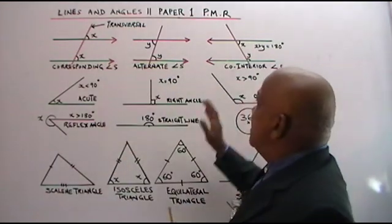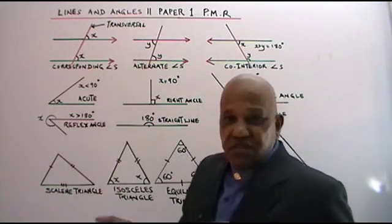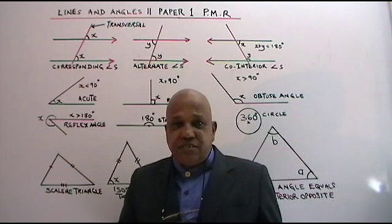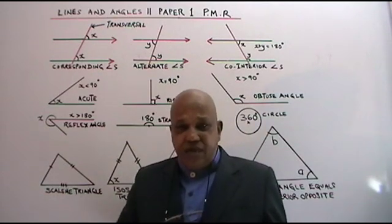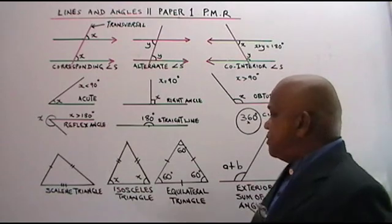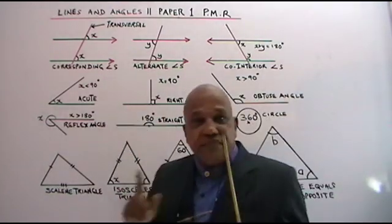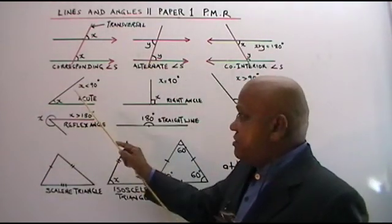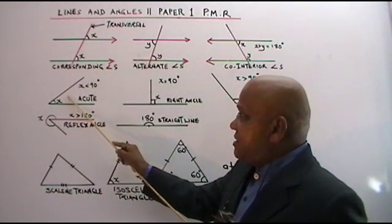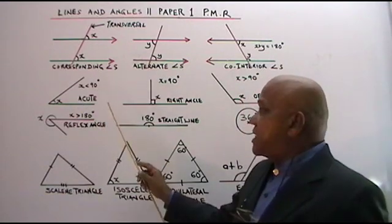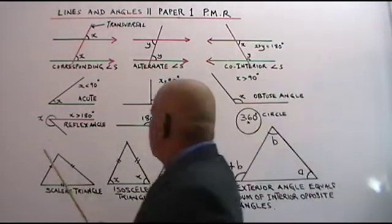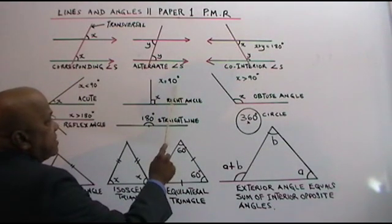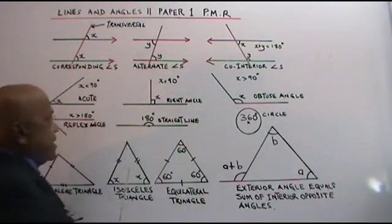Like I said, this is what you see in the books, but it is not enough. If you want to attack PMR questions effectively and fast, you need extra knowledge. For example, if the angle is less than 90 degrees, it is an acute angle. If an angle is 90 degrees, it is known as a right angle.